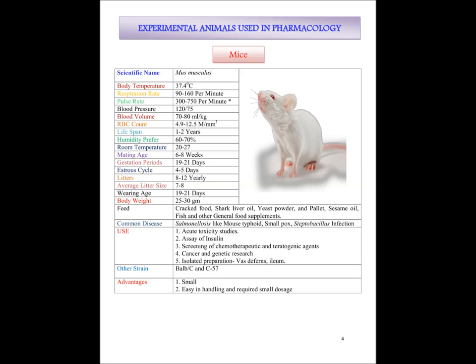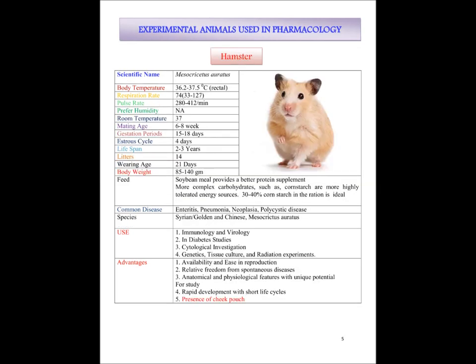The next experimental animal is hamster. The body temperature of hamster is 36.2, variable to 37.5 degree centigrade — this is the rectal temperature. The respiration rate of hamster is 74 per minute. The pulse rate is 280 to 412 per minute. Preferred humidity by hamster is not applicable because they can survive in any type of humidity and do not show much differential effect. The room temperature is 37 degree centigrade. Mating age is 6 to 8 weeks. Gestation period is 15 to 18 days.